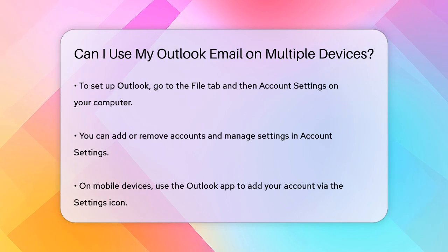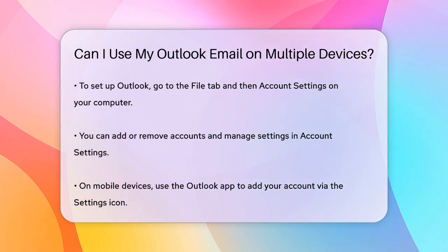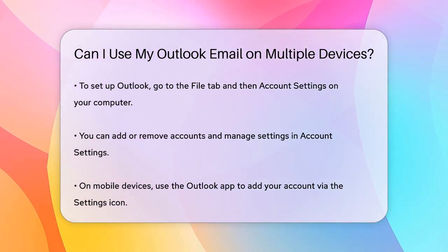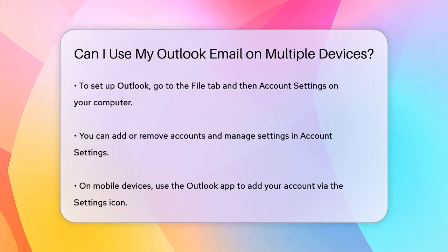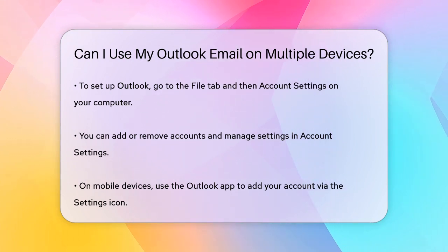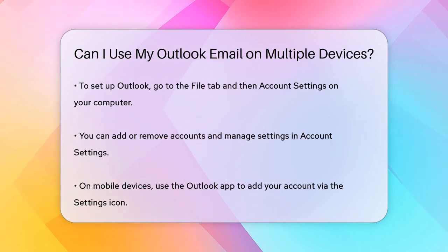On your mobile devices, open the Outlook app, select the Settings icon, and add your account. Follow the prompts to complete the setup and your emails, contacts, and calendar events will be synced across all your devices.